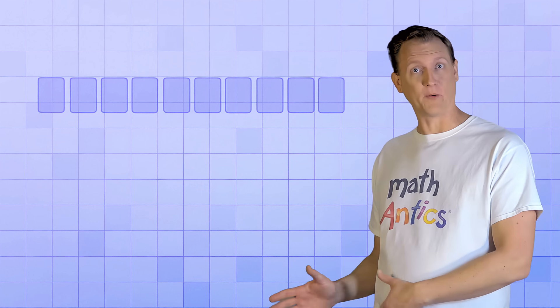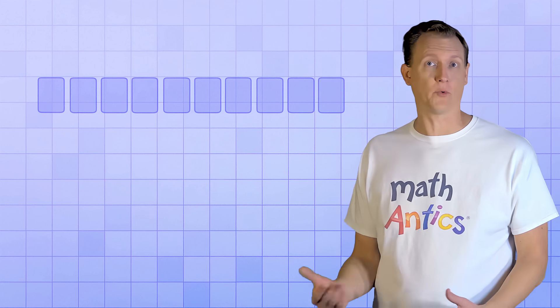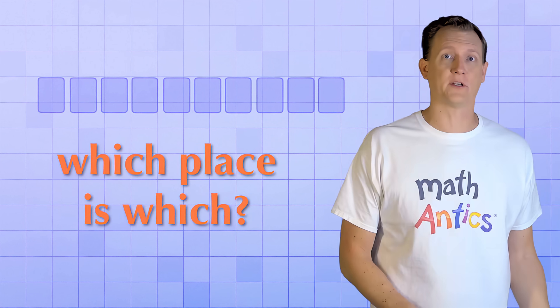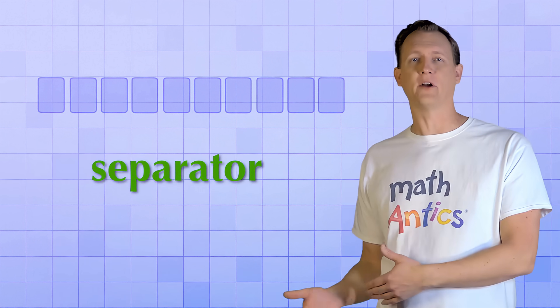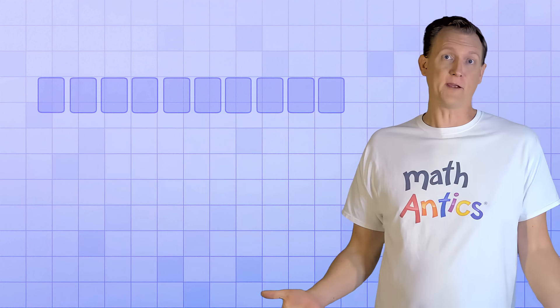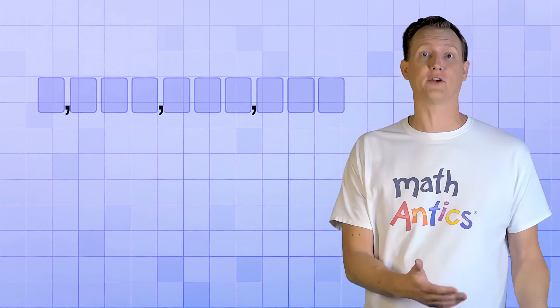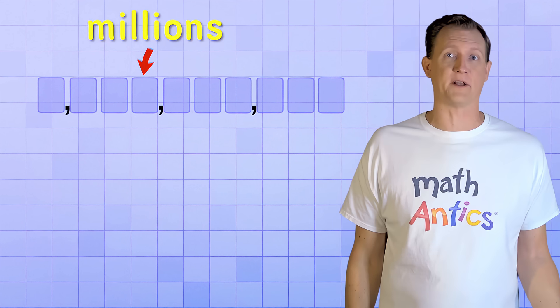Oh, and you may notice that when we get a lot of number places next to each other like this, it's a little hard to quickly recognize which place is which. That's why many countries use some kind of separator every three places to make them easier to keep track of. For example, in the US, we use a comma every three number places to make it easier to identify things like the thousands place or the millions place.